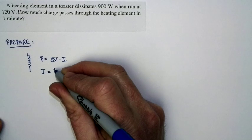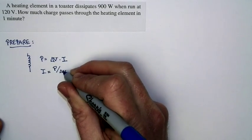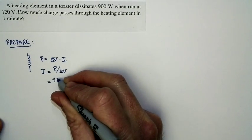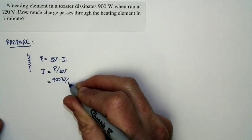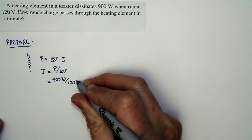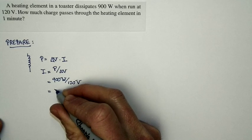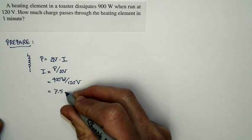The current is just P divided by delta V. The power in the toaster is 900 watts. The voltage at which the toaster is run is 120 volts. And so I end up with a current of 7.5 amps.